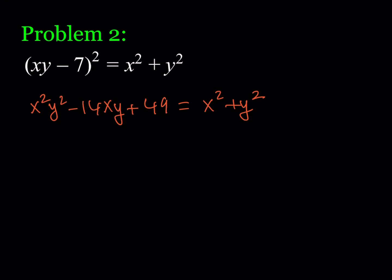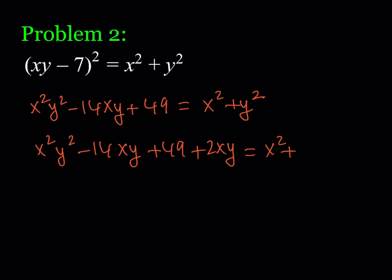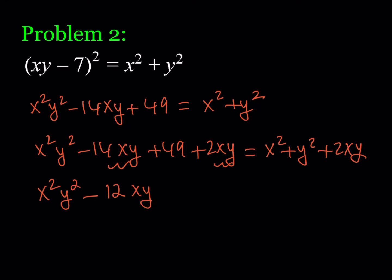The right-hand side x² + y² is calling for a ±2xy term. Adding 2xy to both sides works better. The left side has −14xy, and adding 2xy gives −12xy. To complete the square, half of 12 squared is 36, so I need 36 on the left. Since I have 49, there's a leftover of 13.